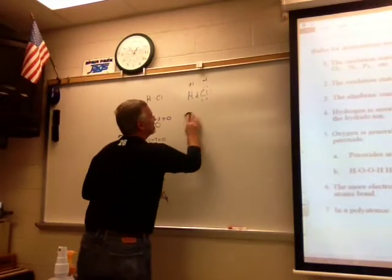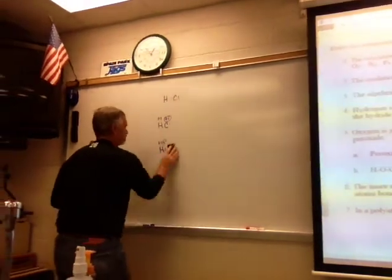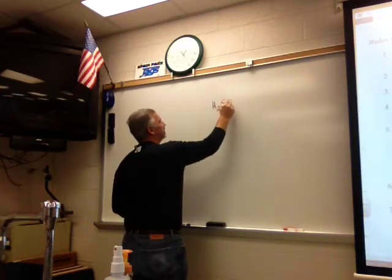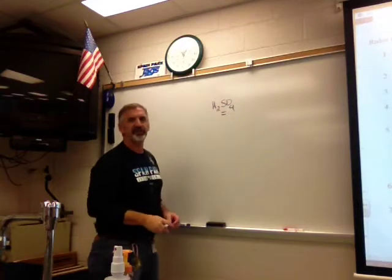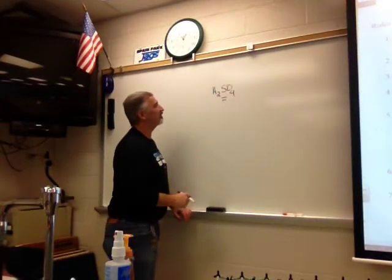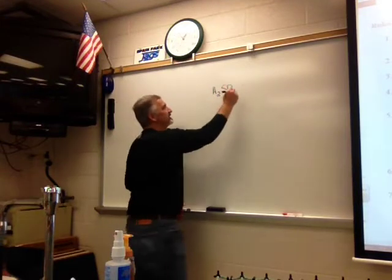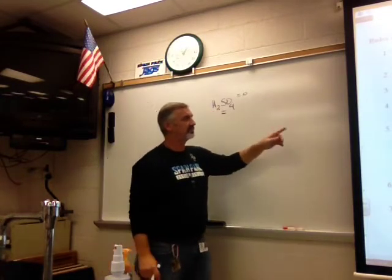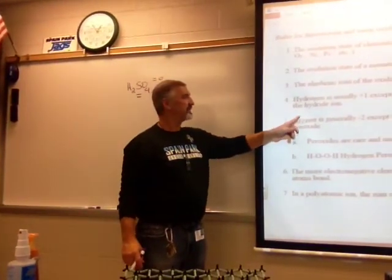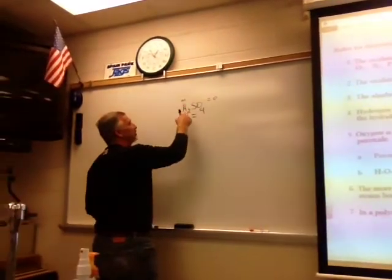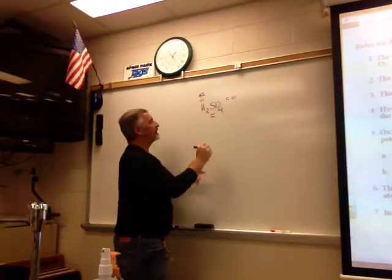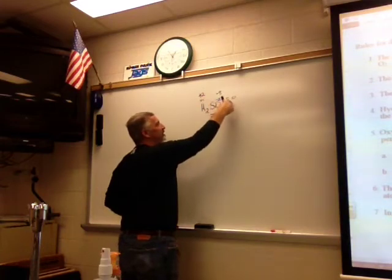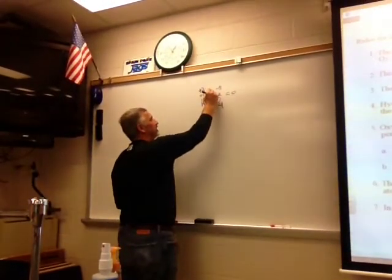Let's practice calculating oxidation numbers. For H2SO4: it's a compound so it adds up to zero. Hydrogen is plus one, but there are two for a total of plus two. Oxygen is minus two, but there are four for a total of minus eight. So sulfur must be plus six to make it equal zero. That means sulfur has all six of its electrons involved in bonding — it doesn't lose them, they're just shared with oxygen.